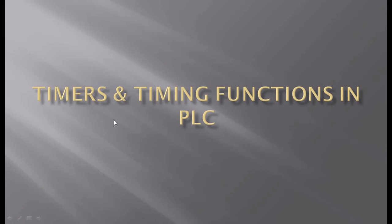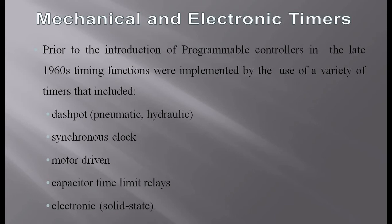Prior to the introduction of programmable logic controllers in the late 1960s, timing functions were implemented using a variety of timers. Those included dashpots for pneumatic and hydraulic circuits, synchronous clocks, motor-driven timers, capacitive time-limit relays, and electronic timers. These were different types of timers used before PLCs were introduced.